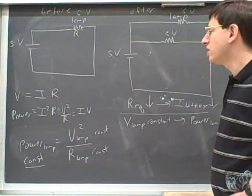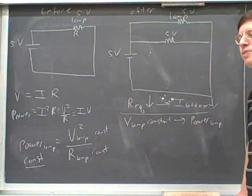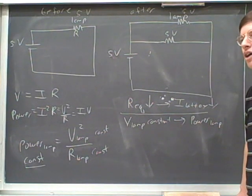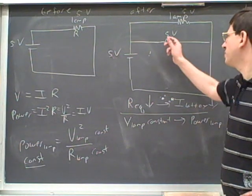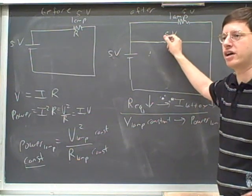Now, that actually shouldn't surprise us. Remember, in your house, are the appliances in series or parallel? They're in parallel. Because do we want the appliances to affect each other? No, we don't. So putting in this resistor here is just like turning on your toaster or turning on another lamp.